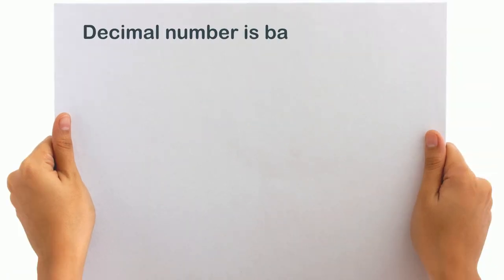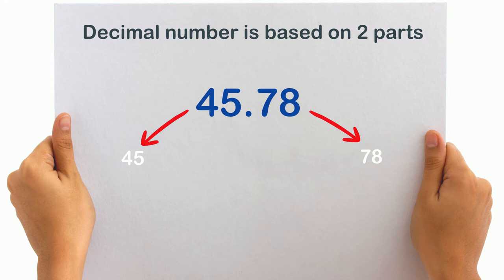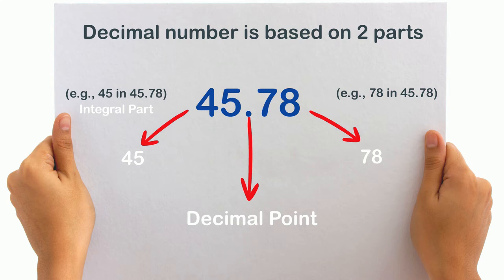Let's understand the making of decimal numbers. A decimal number is based on two parts. For example, in 45.78, one part lies on the left of the point — that is 45 — and the other part lies on the right of the point — that is 78. The point that separates these two parts is known as the decimal point. The left part, i.e. 45 in 45.78, is known as the whole part or integral part, and the right part, i.e. 78 in 45.78, is known as the decimal part. The integral part and the decimal part are separated by the decimal point.